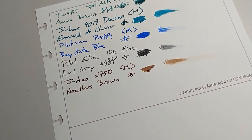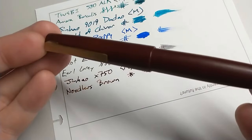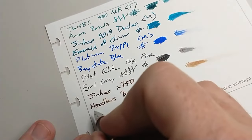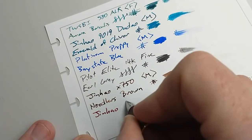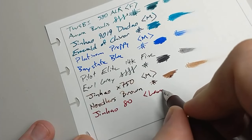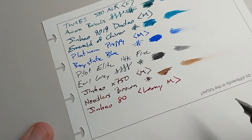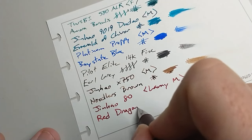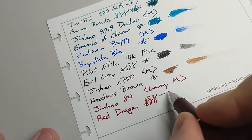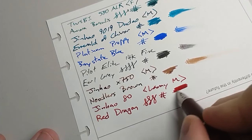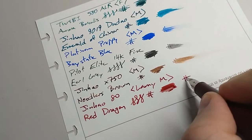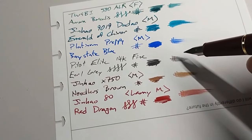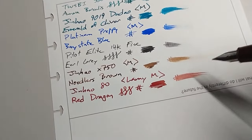This next one is a Jin Hao 80, it's a nice burgundy color. This is a Lamy nib that I put in it. This is Diamine Red Dragon, which is just a nice solid red — the leaves changing colors. These two here are certainly really good fall colors, maybe the gray too. It kind of makes up for my lack of fall in those other ones.